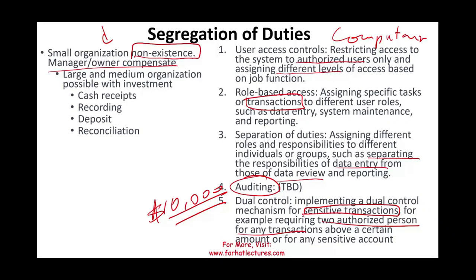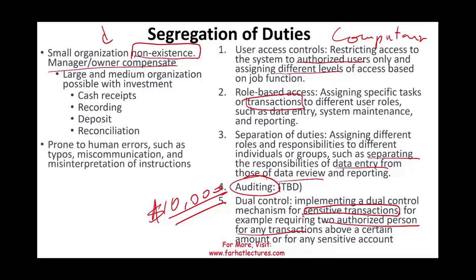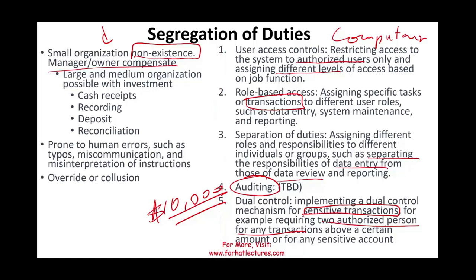The problem with manual controls is that they are prone to human errors: typos, miscommunication, misinterpretation of instructions, tiredness, and laziness. There's also the risk of override or collusion — someone not doing what they're supposed to, or a supervisor colluding with a subordinate, defeating the purpose. Bear in mind that a computerized system can also be overridden and is subject to hacking.